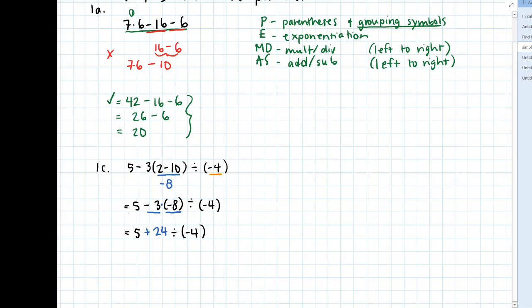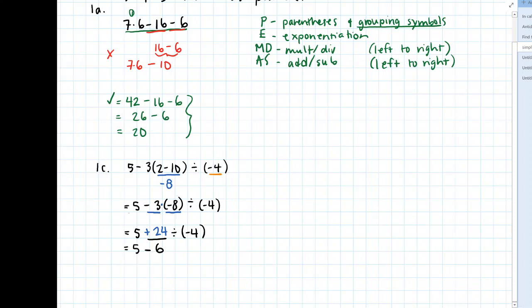The division happens, and this is the same as 5 plus 24 divided by negative 4. When you divide a positive number and a negative number, the result is also negative. So here this is minus 6, and then 5 minus 6, this is negative 1.